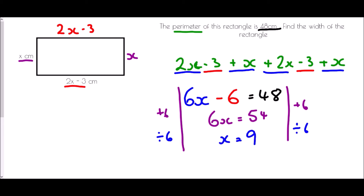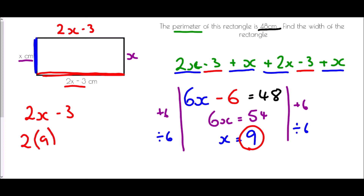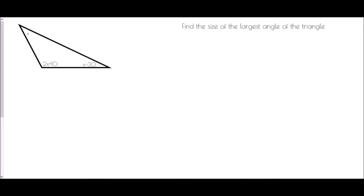Dividing by 6 gives x = 9. But x is the height of the rectangle, not the width. To find the width we substitute x = 9 into 2x − 3: 2 × 9 − 3 = 18 − 3 = 15. So the width is 15 centimeters.